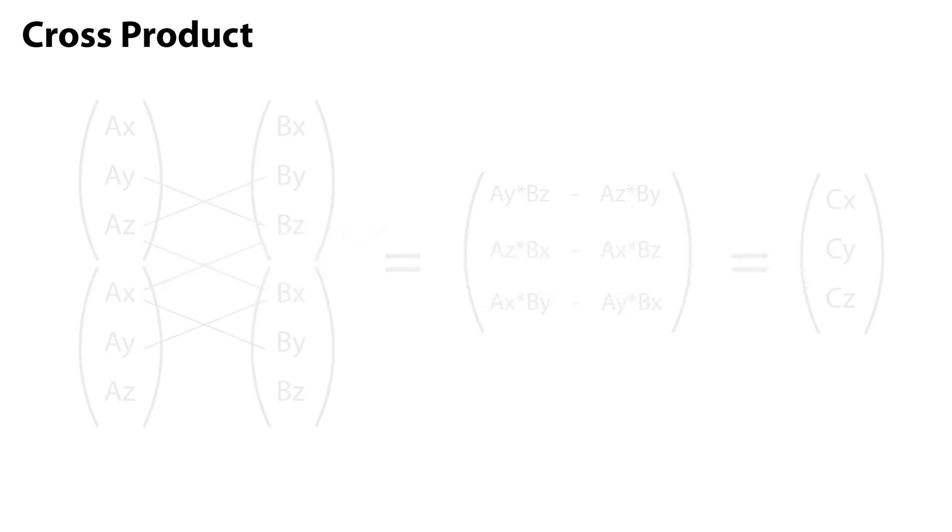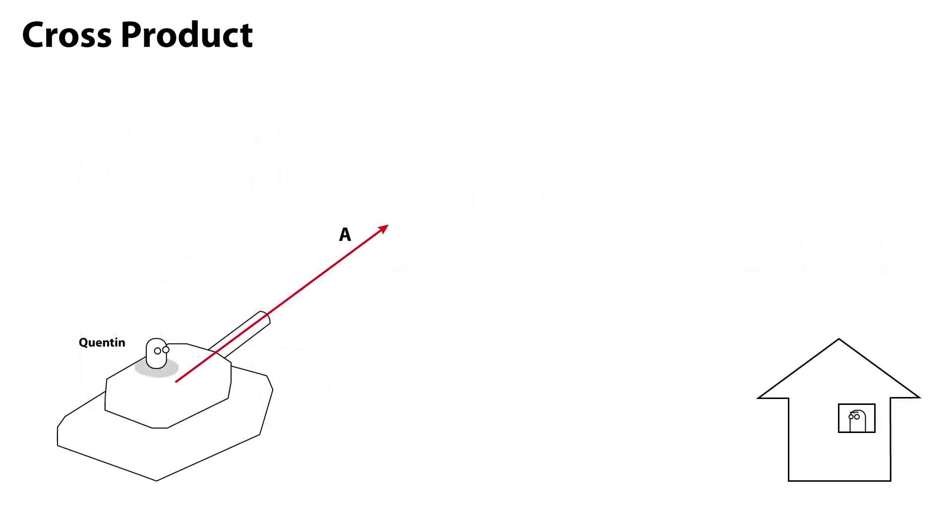One example of using the cross product is finding the axis around which to apply torque, in order to rotate a tank's turret. Given that you have the direction that the turret is currently facing, and the direction that it needs to face, you would cross these two vectors to find the axis around which to apply rotational torque.